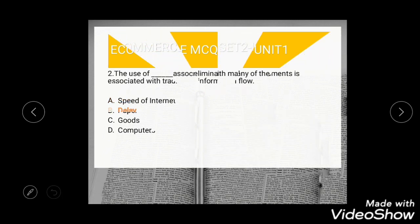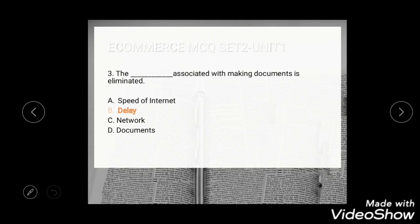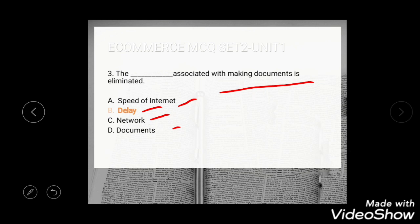Question 3: The dash associated with making a document is eliminated. Options are: speed of internet, delay, network, and document. The correct answer is delay — the delay associated with making a document is eliminated.